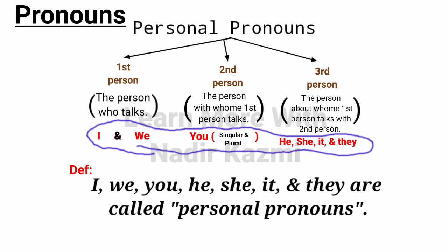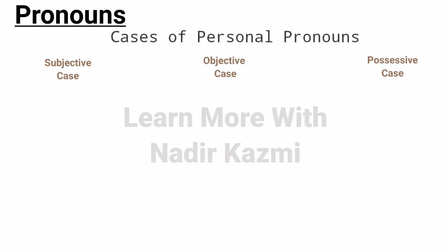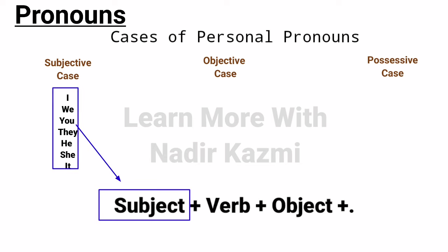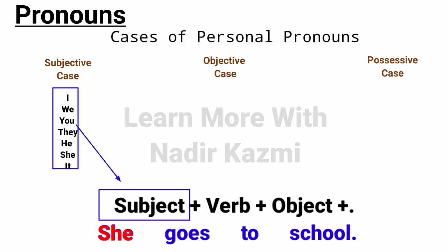Cases of personal pronouns: there are three cases. Number one is subjective case, number two is objective case, and number three is possessive case. In the subjective case, personal pronouns like I, we, you, he, she, they are used as subjects. For example: 'I go to school, we go to school, you go to school, they go to school, he goes to school, she goes to school, it goes to school.' So these pronouns are always used as subjects — that's why they are said to be in subjective case.